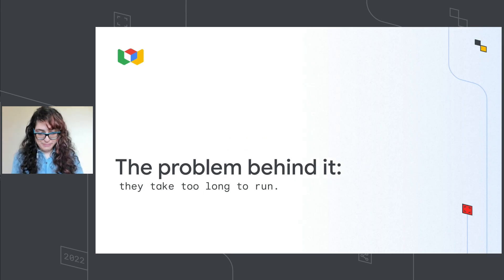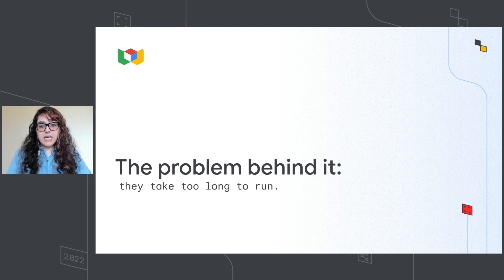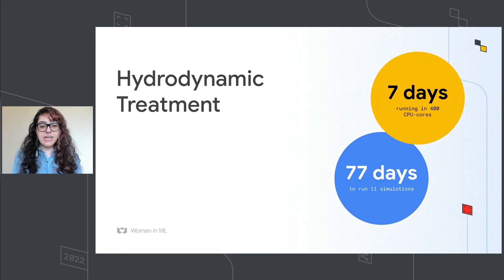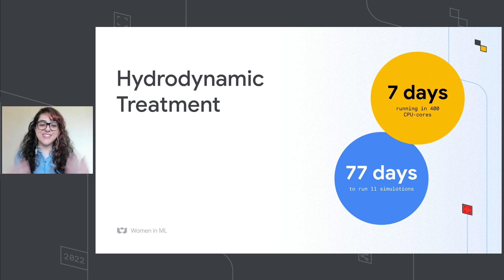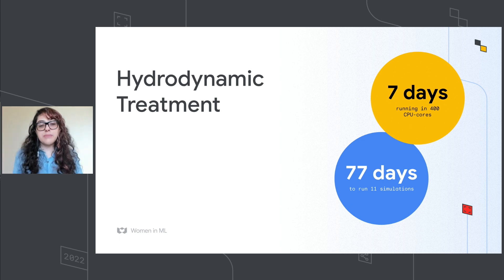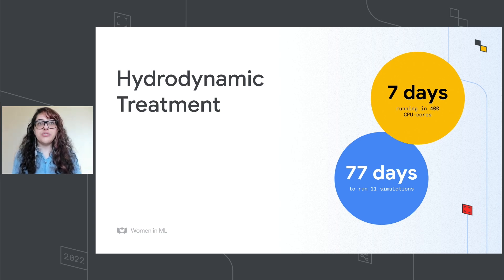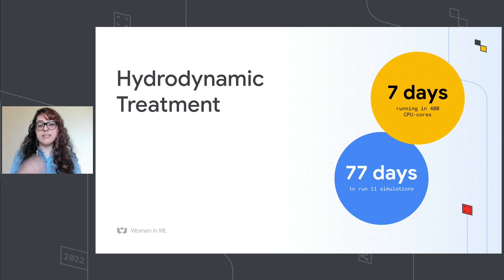There is a major problem: these simulations take too long to solve and require enormous computational resources. For example, simulating with a hydrodynamic treatment in two dimensions — and we know the world is three-dimensional — takes seven days running on 400 CPU cores. That's a lot, especially when you need to consider different initial conditions. In my work, I used 11 simulations, and this took 77 days to simulate.